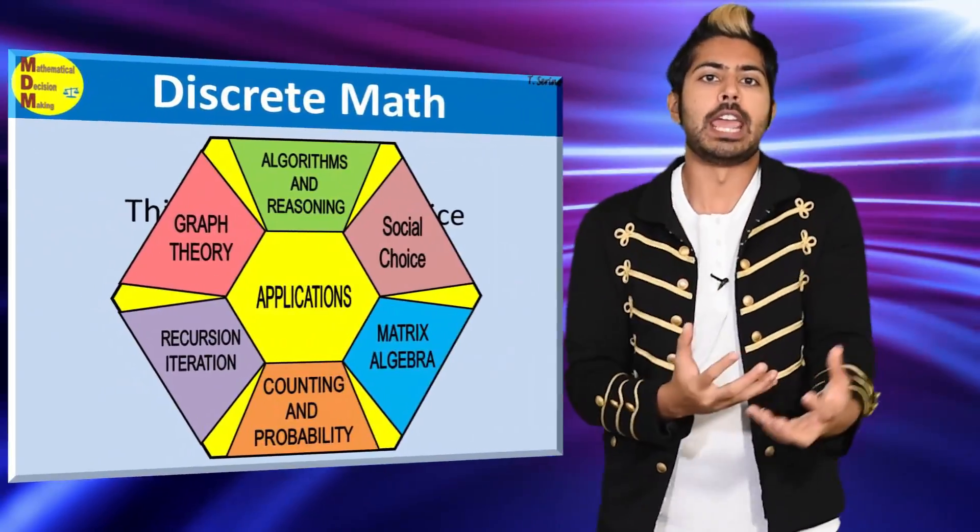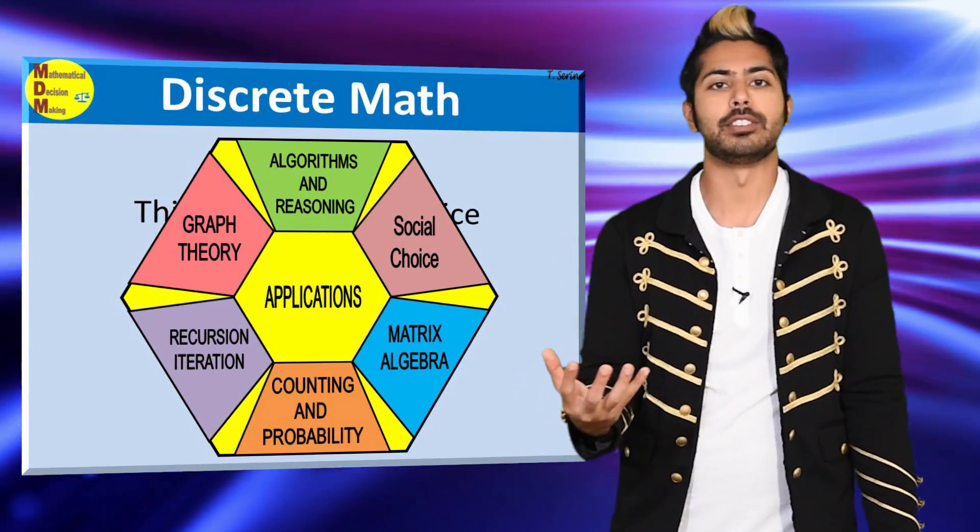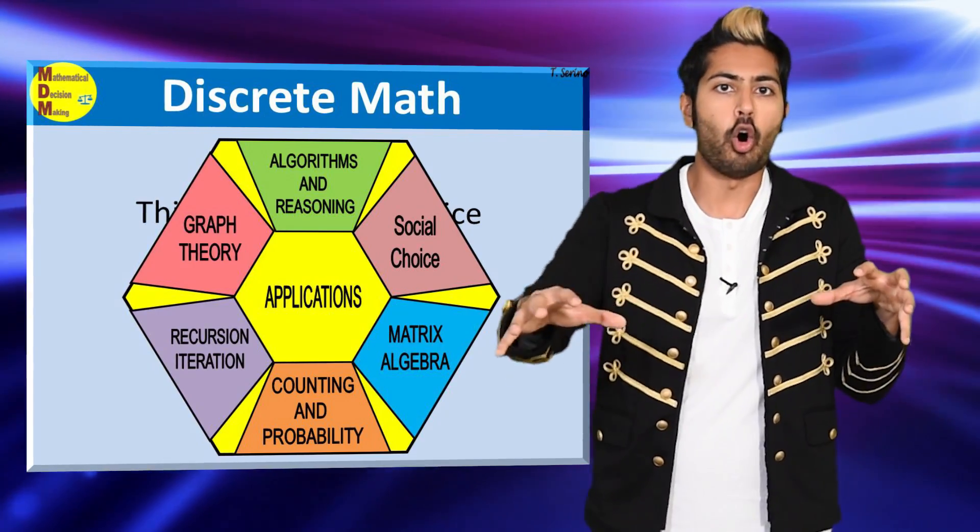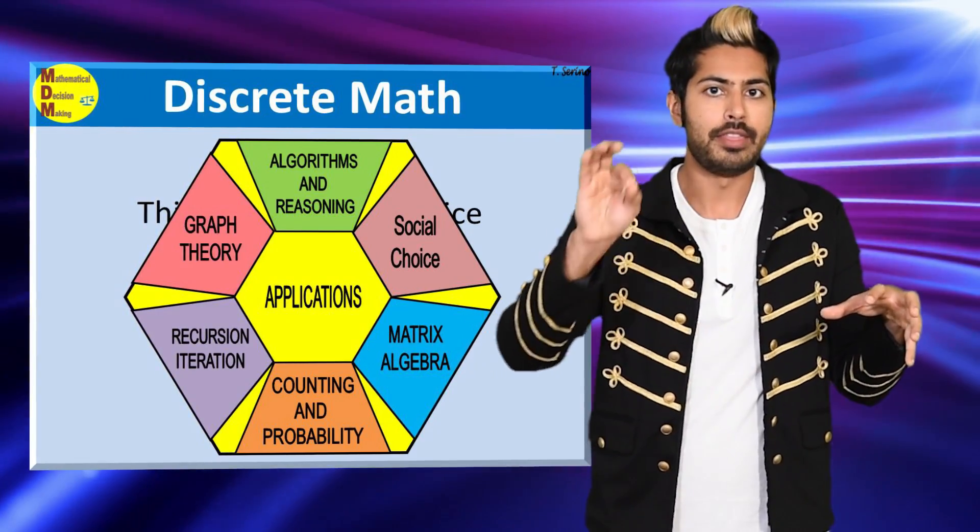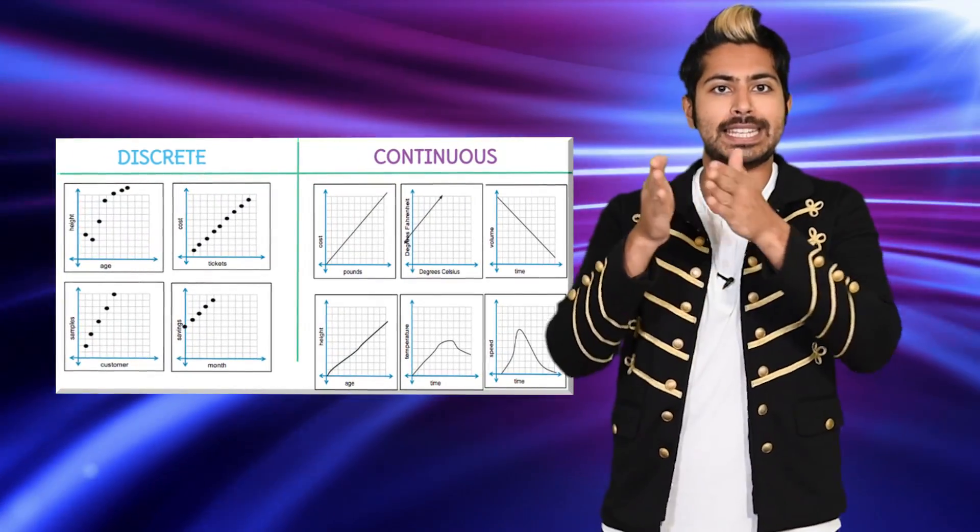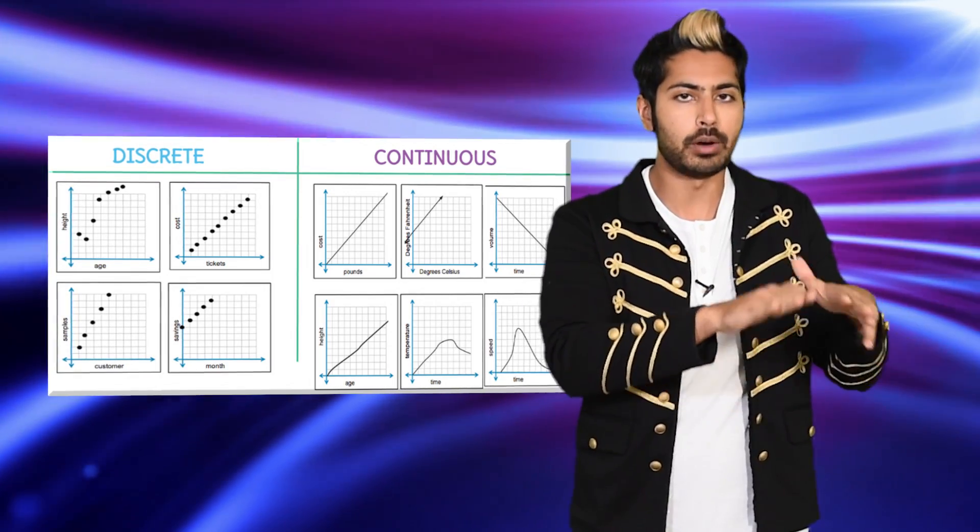Discrete math isn't actually the name of a traditional branch of mathematics like calculus or linear algebra is. It's instead a description of a set of branches of math that all have in common one feature. They're discrete, rather than continuous. Discrete stands for individually separate and distinct, while continuous stands for forming an unbroken whole without interruption.